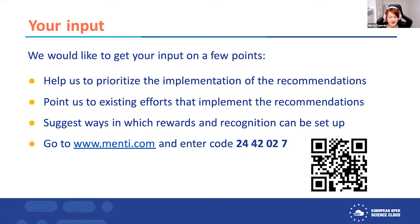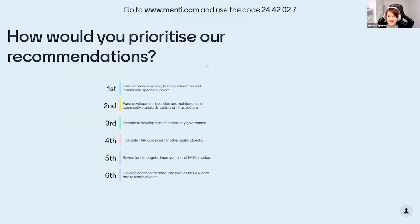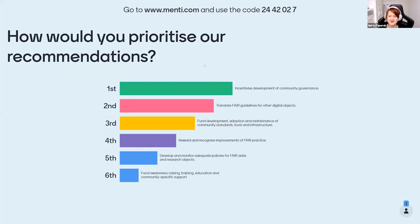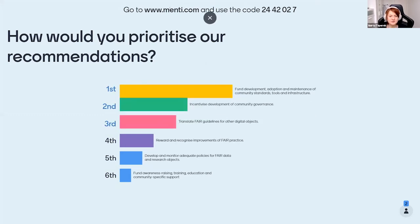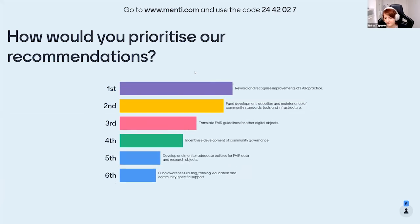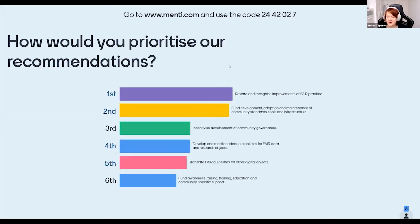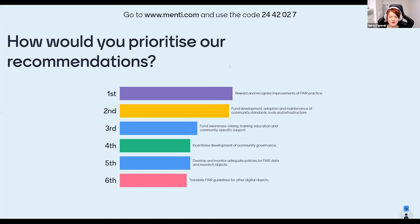Thank you, Rob. We would be grateful if you could help us answer some questions about this work and for the Strategic Research Innovation Agenda — the EOSC SRIA document. There are priorities to be established from our work. I would like to do this via Mentimeter. If you go to www.menti.com and use the code 2442027, we would be most grateful if you could help us prioritize some of these recommendations.